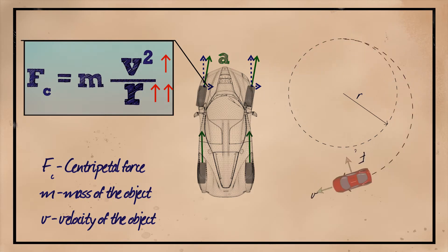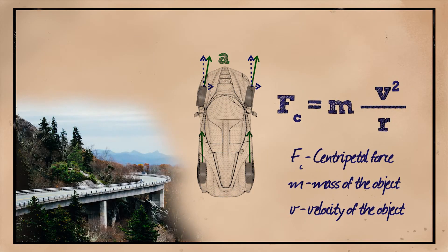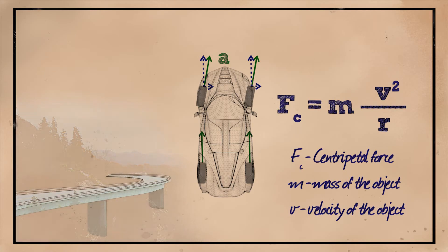However, in a real-world scenario, we don't really have control over these parameters. Unless we eject a passenger mid-drive, the mass of the car is pretty much fixed, and the same applies for the radius of the curve, so we are essentially left with only two parameters to play with.